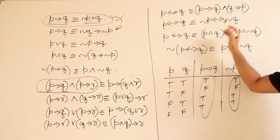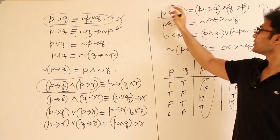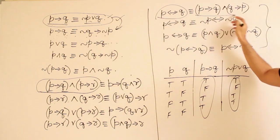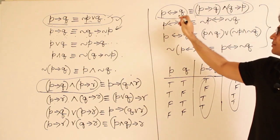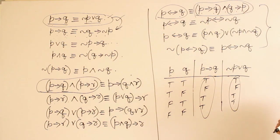And similarly, these are the equivalences for bi-implication. A bi-implication is nothing but conjunction of two implications. P bi-implication Q is nothing but P implies Q and Q implies P. Got it?